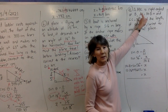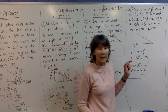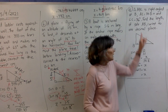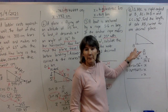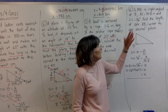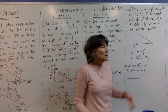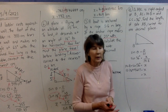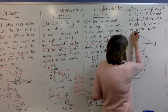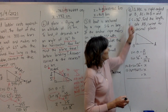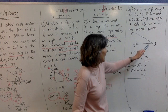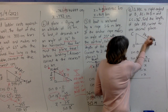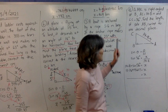Last question: triangle ABC is right-angled at B. Draw the right-angle triangle with B at the right angle, and label the other vertices A and C. AC is 14.8 meters — that's the side joining A to C. Angle C is 56 degrees.